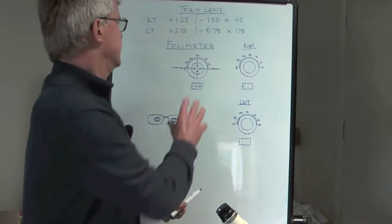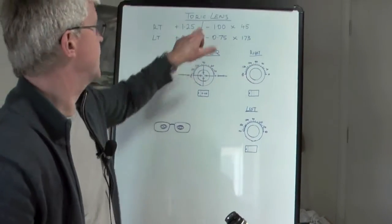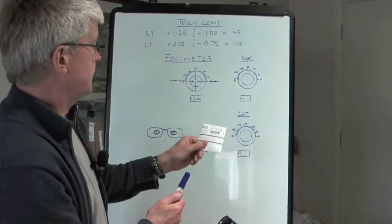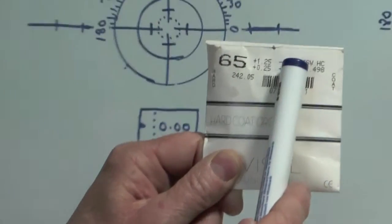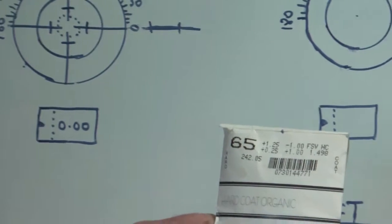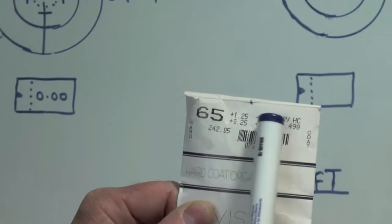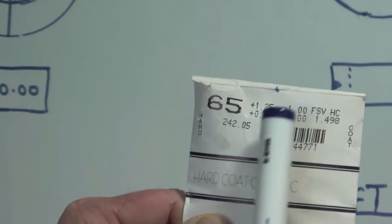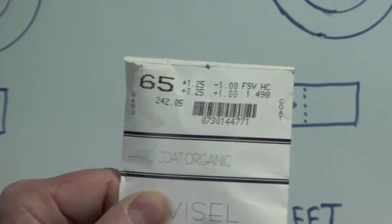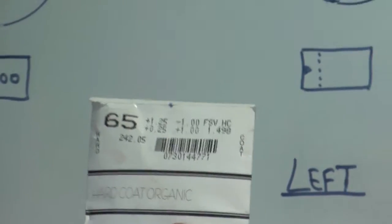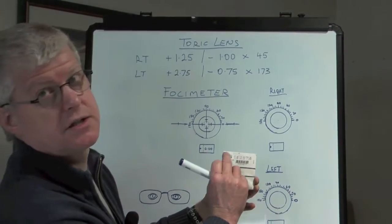There's no lens in there, but the focimeter is measuring plano at the moment. We then need to get the lens, and we're going to start with the right lens. We got plus 1.25 minus 1. Remember we were learning that you can write a toric lens in two different ways - minus cyl and plus cyl. I tend to work in minus cyl form.